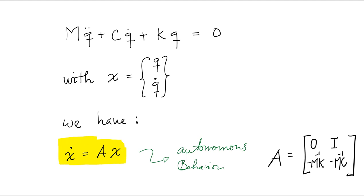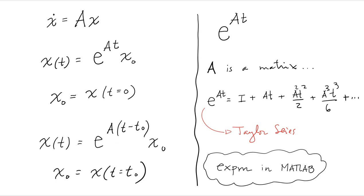And we have our state because we can define autonomous behavior where A is zero, identity, M to the minus one K, M to the minus one C. Now, that's okay, but how does that help us? Well, that helps us because once I write my equation of motion in this form, I can show very easily that the solution to that equation, the exact solution, is this right here.